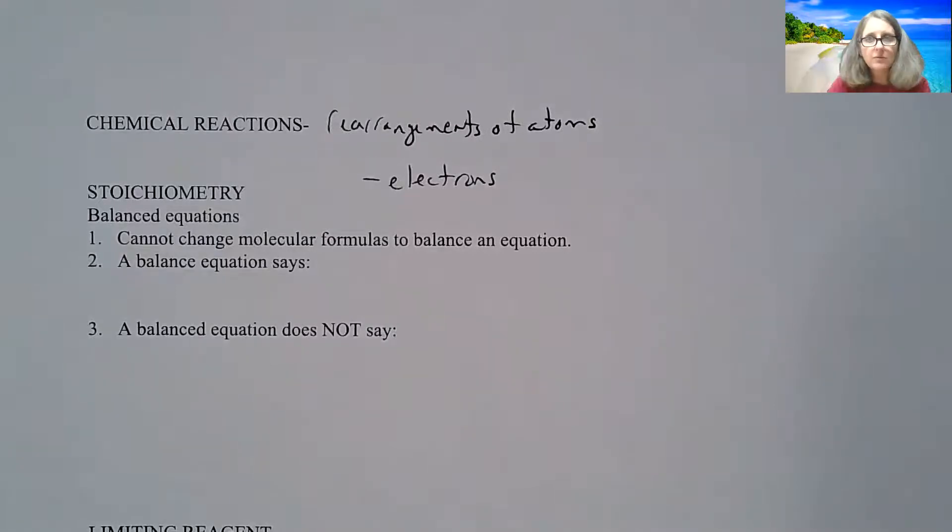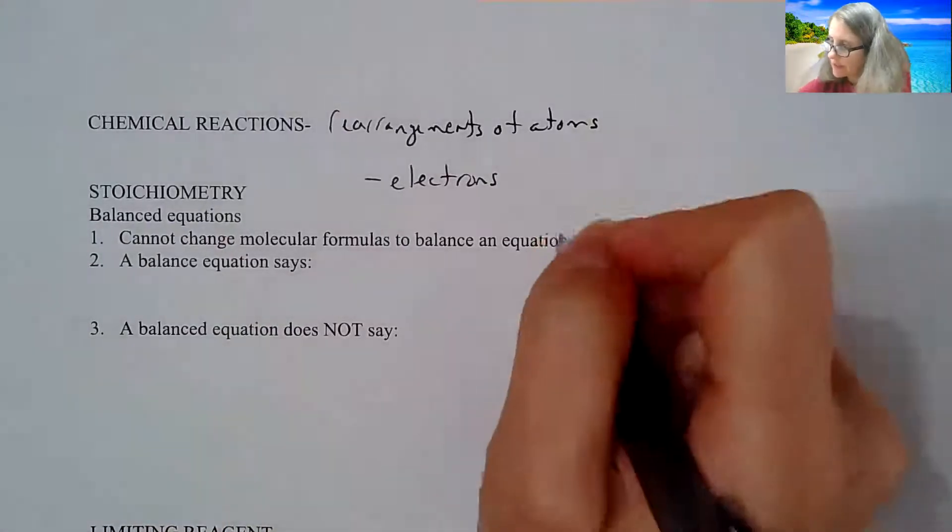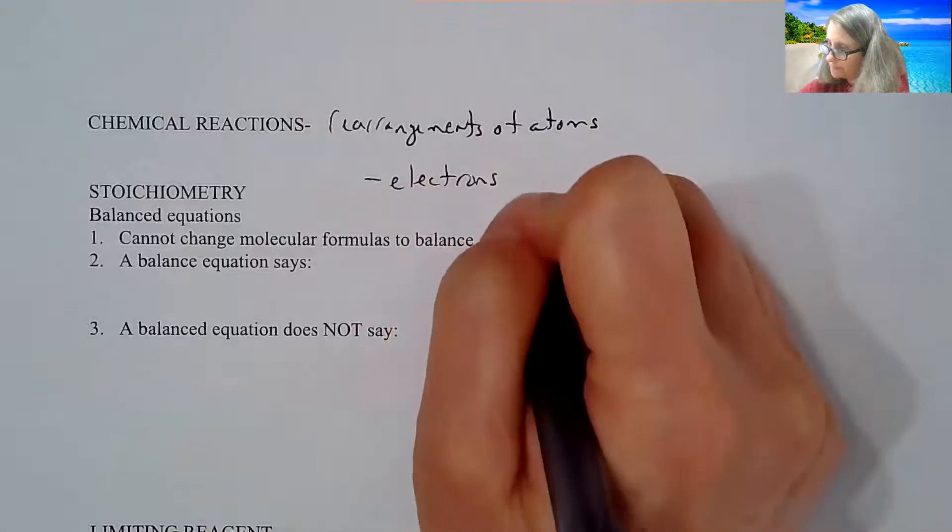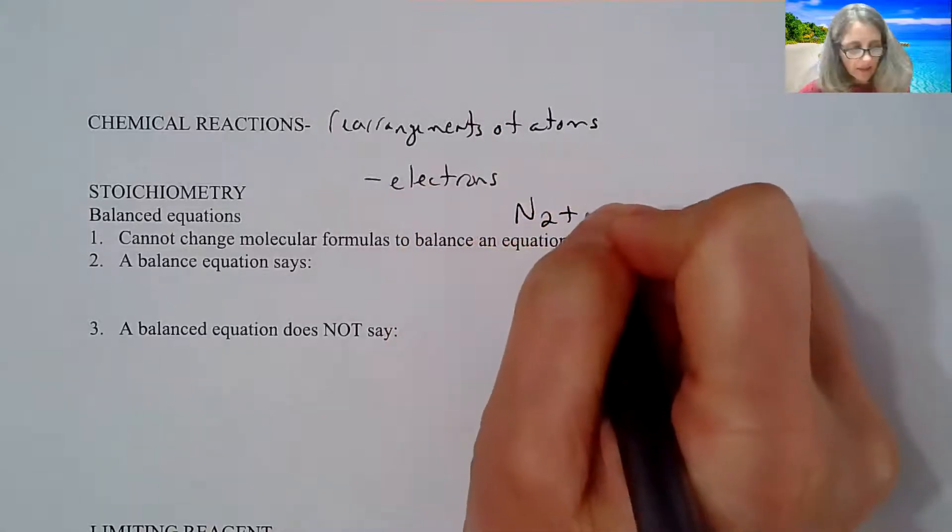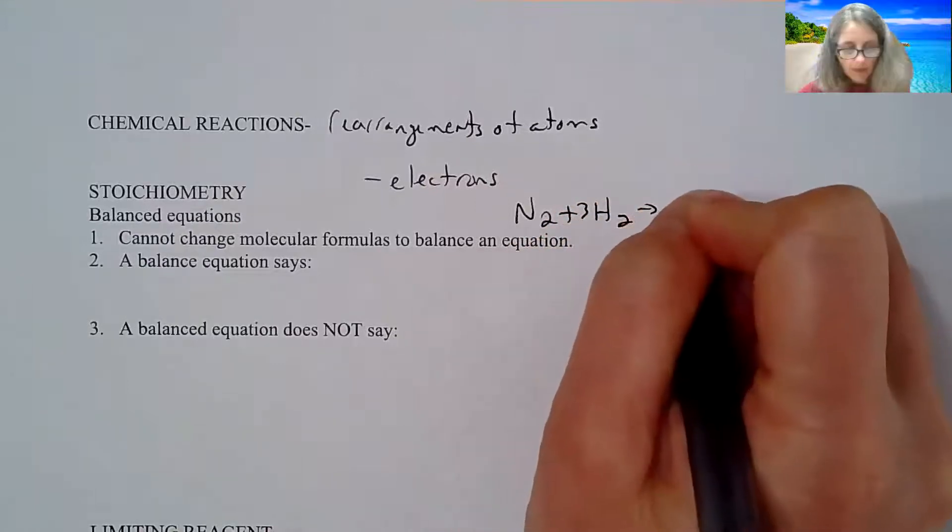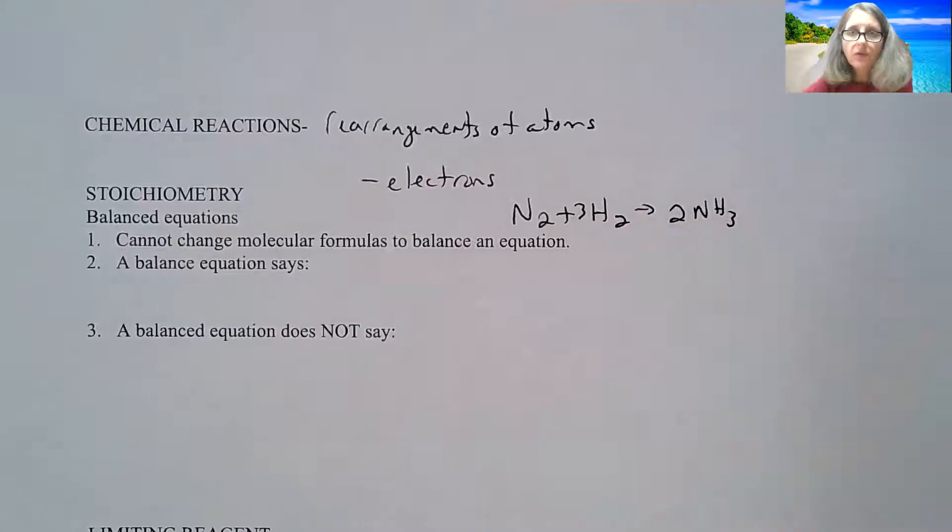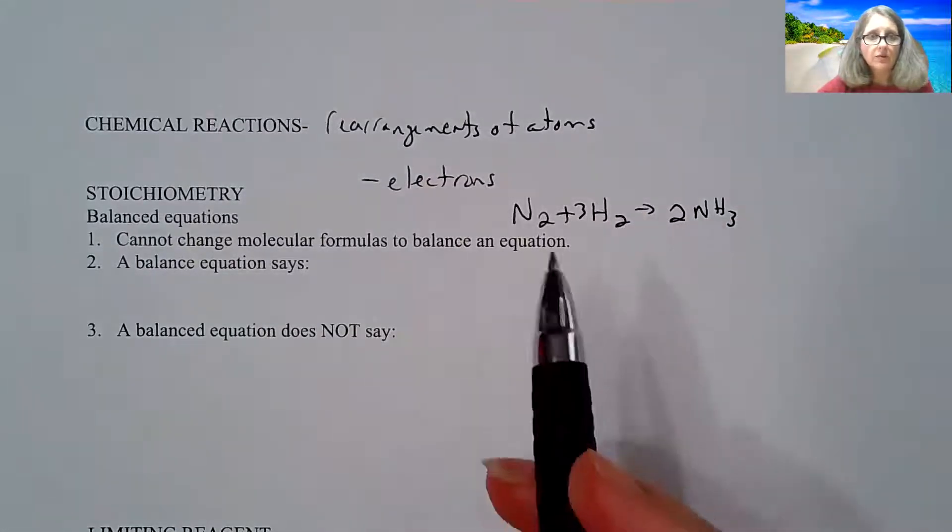If we have this rearrangement, we can quantify how much of our starting material versus how much of our ending material based on what we call the stoichiometry. So for the stoichiometry problems, we're going to need a balanced chemical equation. And so the one I'm going to focus on is the Haber process. Nitrogen plus hydrogen produces ammonia.